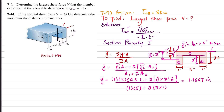So the neutral axis is located 1.1667 inches from the top. The remaining distance from the neutral axis to the bottom is 3 − 1.1667 = 1.8833 inches.